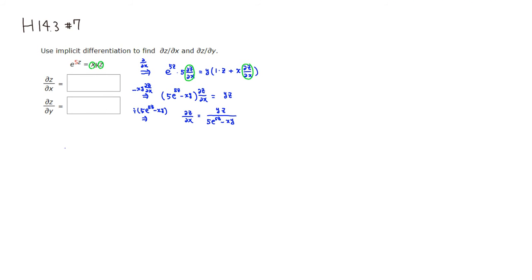The other one is very similar. We're going to take the partial with respect to y. The partial derivative of the left-hand side is going to be e to the 5z multiplied by 5 times the partial of z with respect to y. Now x is a constant, so I'll put it outside. We have to use the product rule because it's y times z. So derivative of y with respect to y is 1 times z, plus y times the partial of z with respect to y.